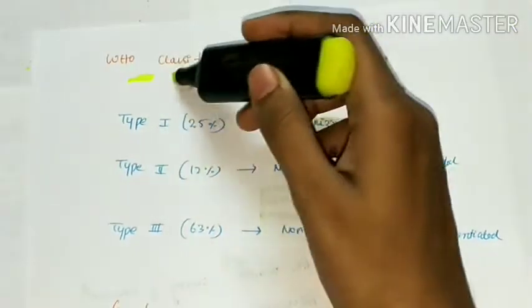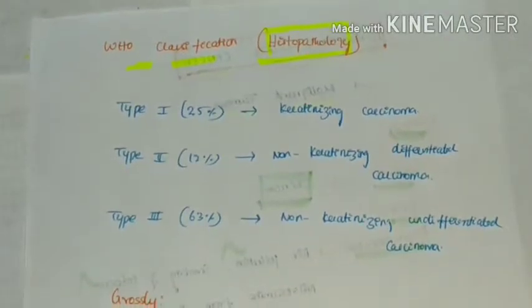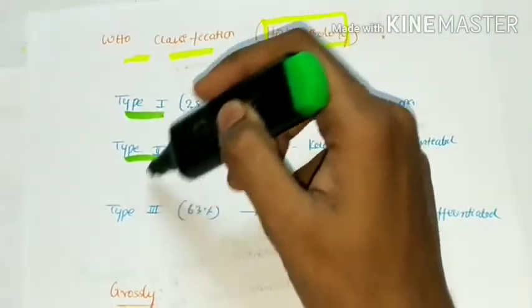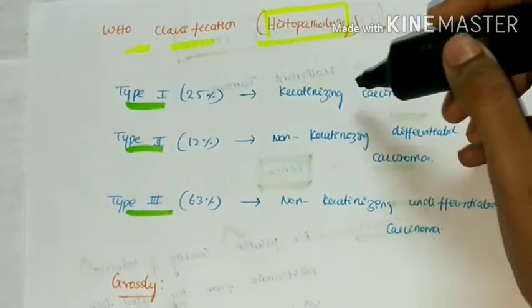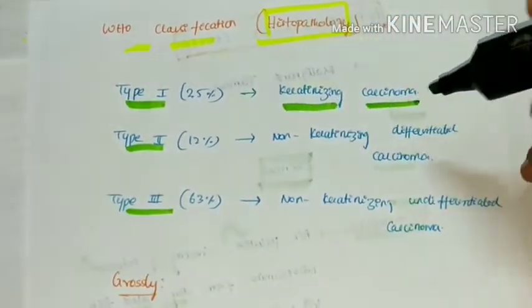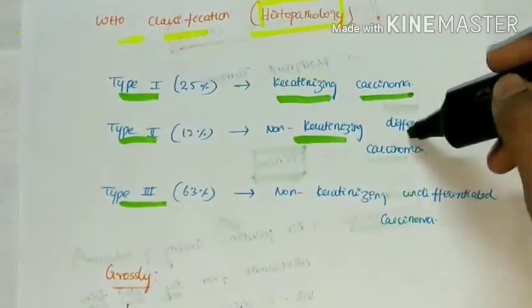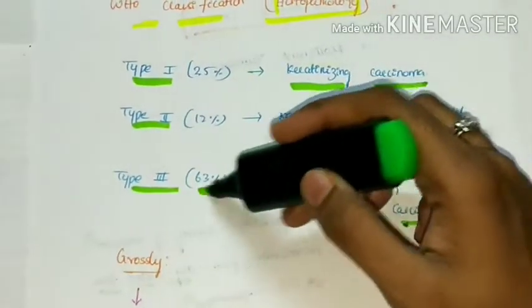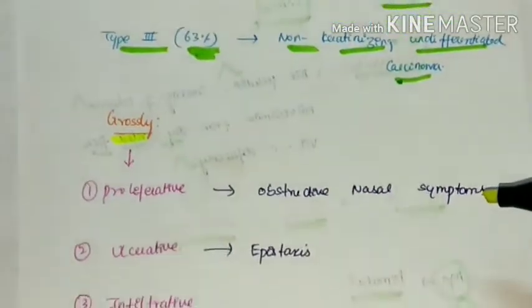Next, the WHO classification based on histopathology. Nasopharyngeal carcinoma is classified into three types. Type 1 constitutes 25% of cases and is called keratinizing carcinoma. Type 2 is seen in 12% and is non-keratinizing differentiated carcinoma. Type 3 is non-keratinizing undifferentiated carcinoma, seen in the majority of cases, accounting for 63%.